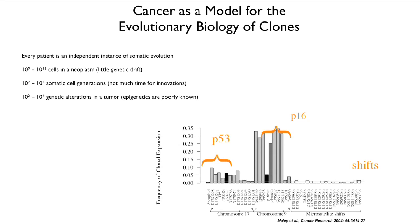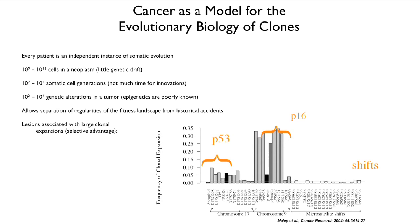Within a tumor, there are between 100 and 10,000 genetic alterations. That allows separation of regularities in the fitness landscape from historical accidents — we can actually see selection versus accident within a well-studied tumor. Lesions are associated with big clonal expansions: P16 methylation and P53 mutation are both strongly affecting the frequency of clonal expansion.